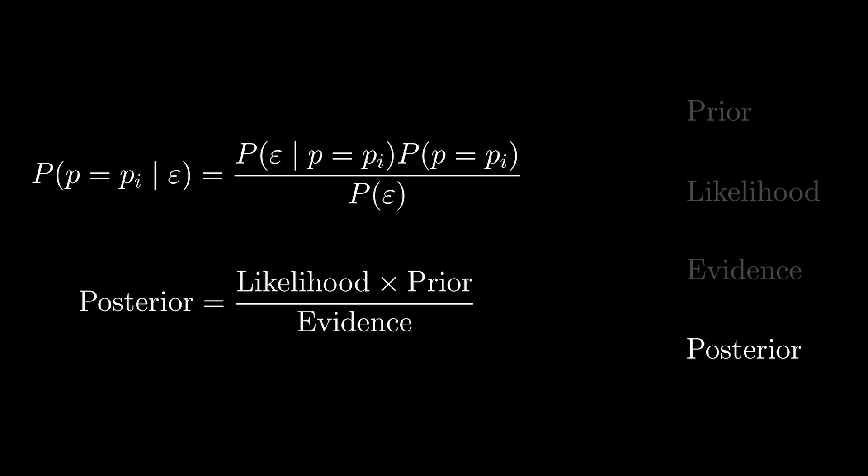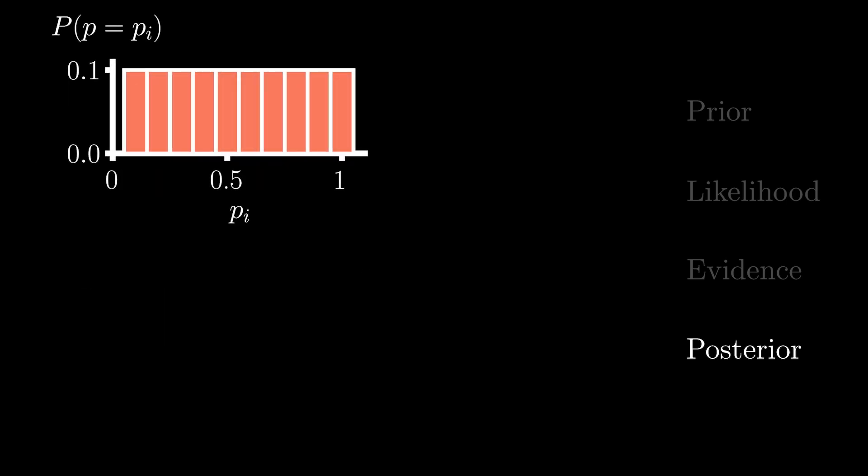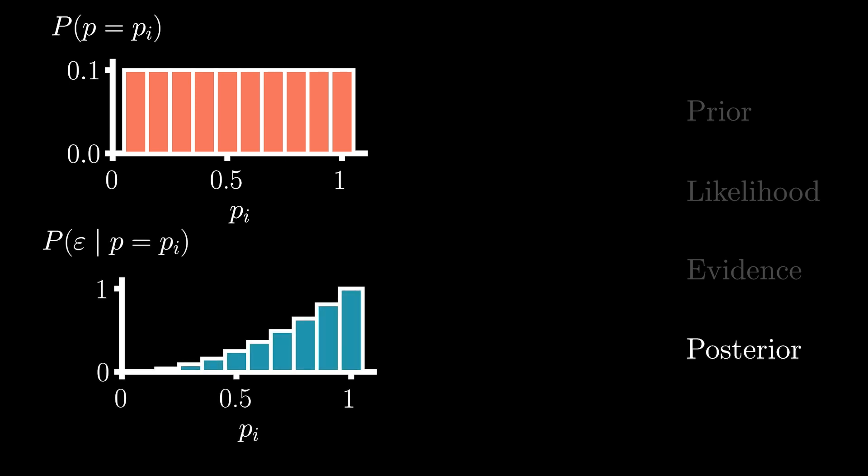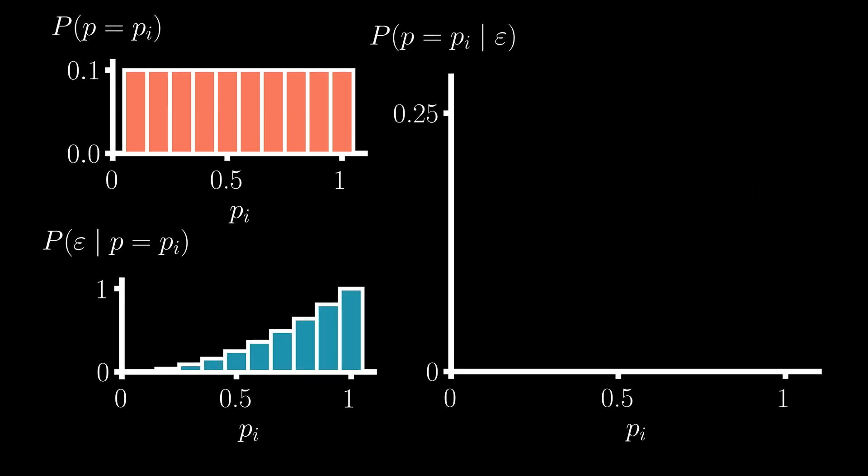Remember, our posterior is equal to our likelihood times our prior divided by our evidence. So, let's remind ourselves of our prior distribution and likelihood functions from earlier, and let's now generate our posterior distribution.